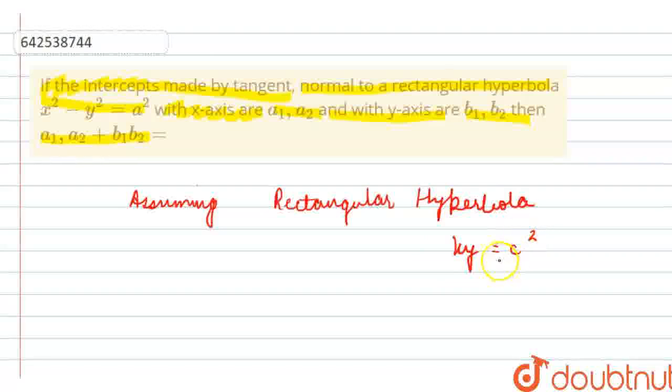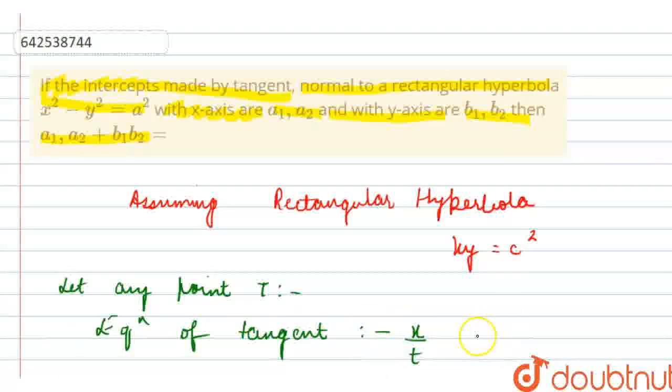Now, if this is the case, then what would be the equation of tangent and normal at any point? Let that point be t. So, I am assuming let any point t. At that point, equation of tangent of this rectangular hyperbola would be x upon t plus ty is equal to c.